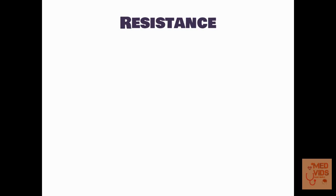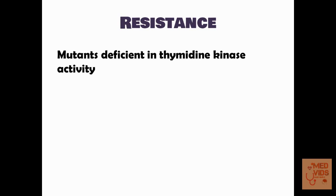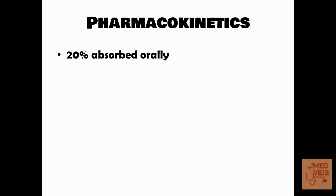Herpes viruses develop resistance to acyclovir by acquiring mutations leading to deficiency in thymidine kinase enzyme activity. As explained in the mechanism of action, the viral-specific enzyme thymidine kinase must phosphorylate acyclovir to acyclovir monophosphate for it to act. If mutants are deficient in thymidine kinase activity, there will be improper activation of acyclovir, leading to resistance.